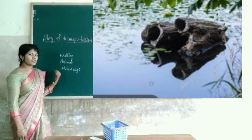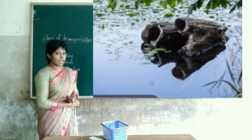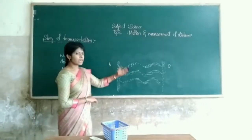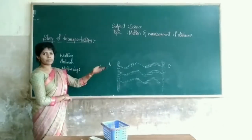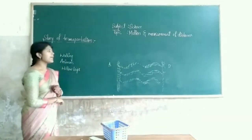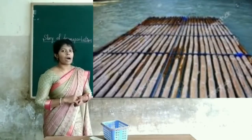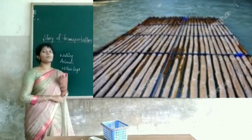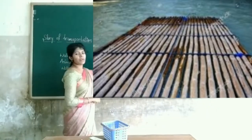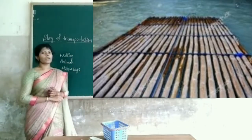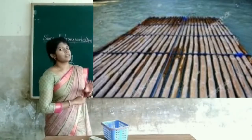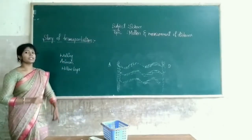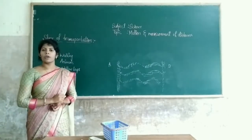Hollow logs could serve only two to three people at a time. So if a large group of people wanted to cross the river, how would they go from one place to another? That time, people collected bamboos and tied them together to make a bamboo board. That bamboo board helped to carry more people from one place to another place. People started moving using bamboo boards, but the speed of bamboo boards was very slow.